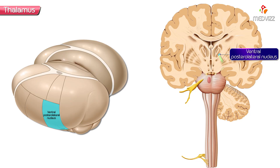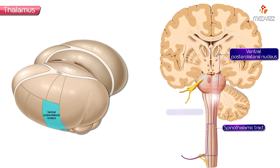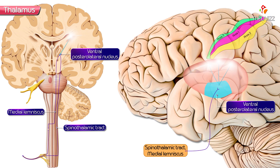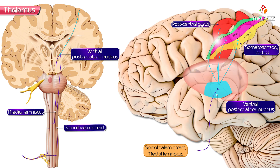Next is the ventral posterolateral nucleus of the thalamus. This nucleus relays information mainly from the spinothalamic tracts and the medial lemniscus, and projects to the somatosensory cortex — Brodmann areas 3, 1, and 2 — as well as to the post-central gyrus.